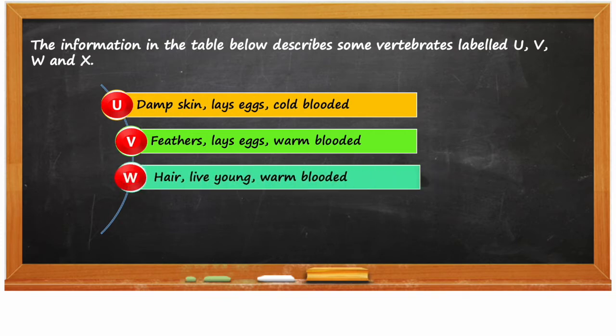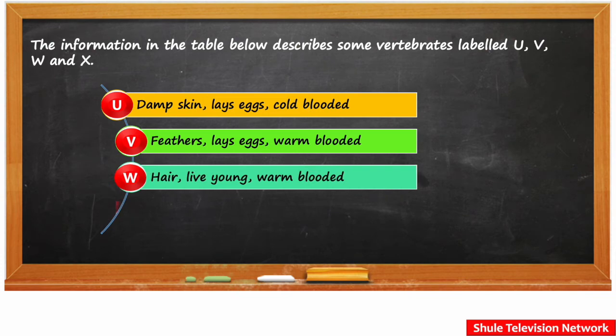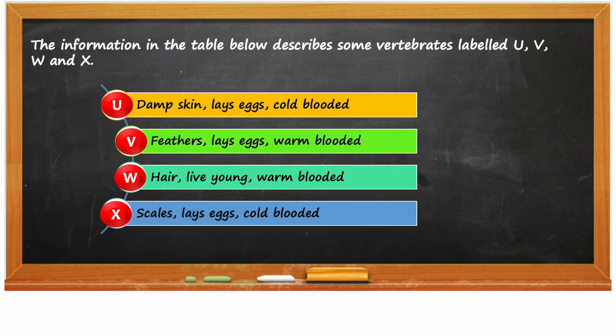The vertebrate labeled W has a hairy body, gives birth to live young ones, and is warm-blooded. The vertebrate labeled X has scales, lays eggs, and is cold-blooded.